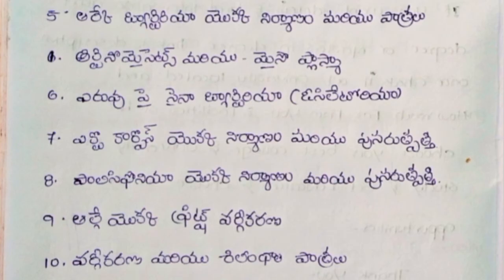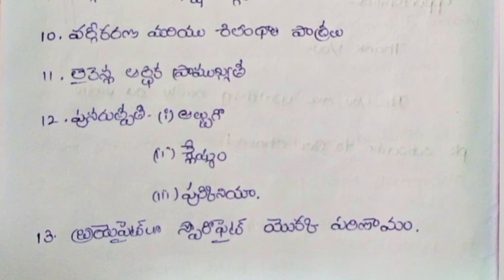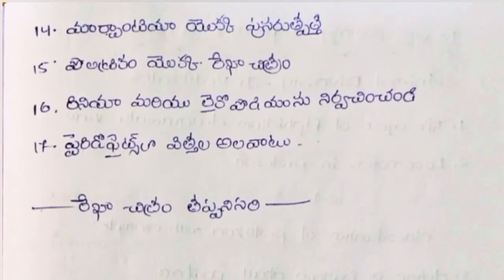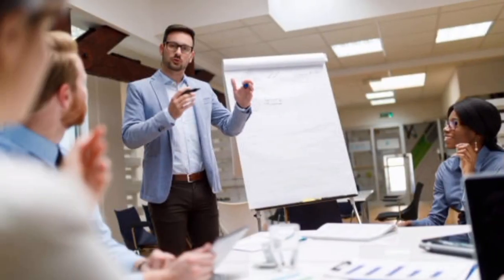Ectocarpus yokk nirmanam maryu punaruthpattii. Polysiphonia yokk nirmanam maryu punaruthpattii. Algae yokk Fritsch vargikarana. Vargikarana maryu shilindal patralu. Lichens la ardhika pramukkya. Punaruthpattii — Albugo, Mucor, Puccinia. Bryophytes lo sporophyte yokk parinam. Marchantia yokk punaruthpattii. Polytrichum yokk rekachitra. Rhynia maryu Lycopodium nirvachanam. Pteridophytes vithnala alavatlu.